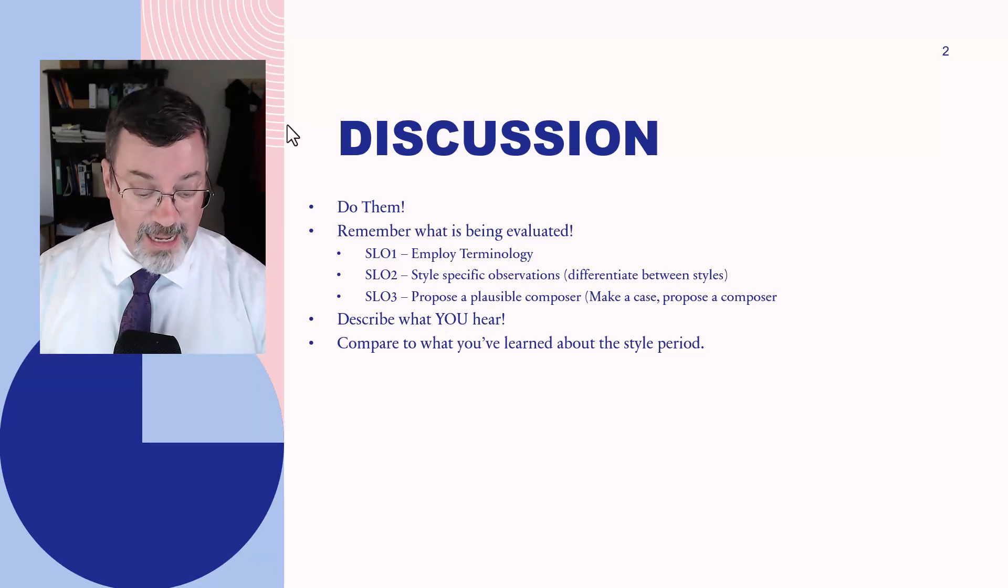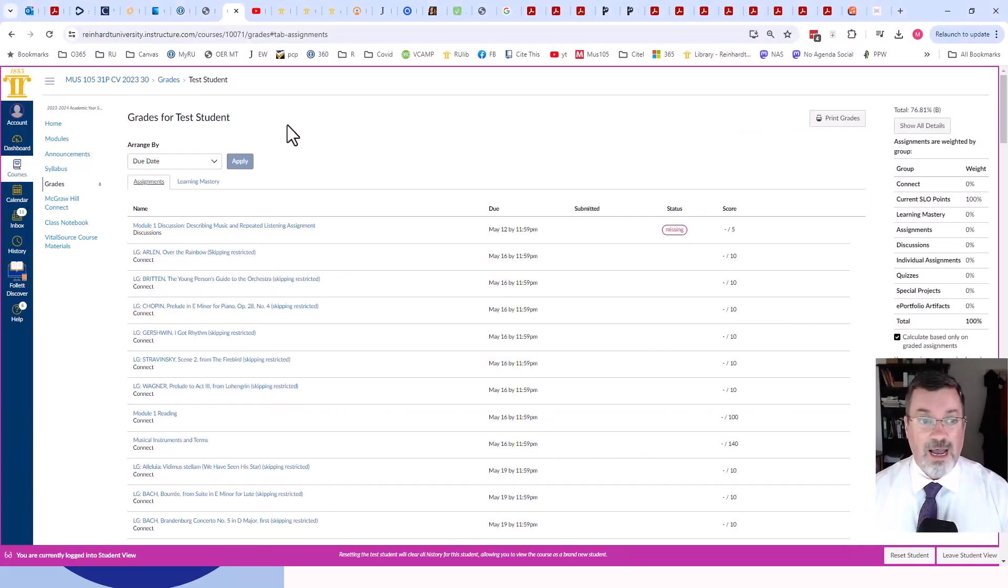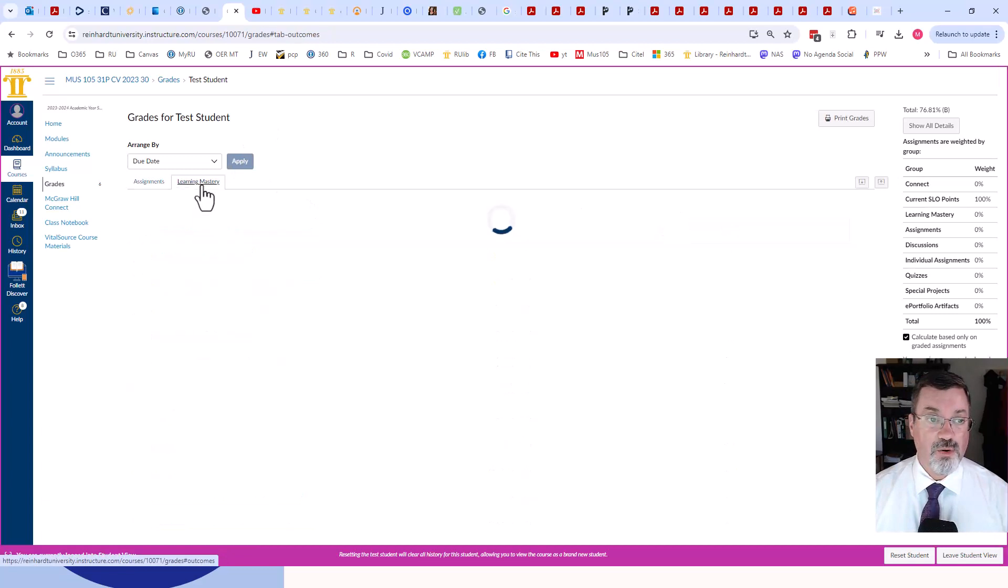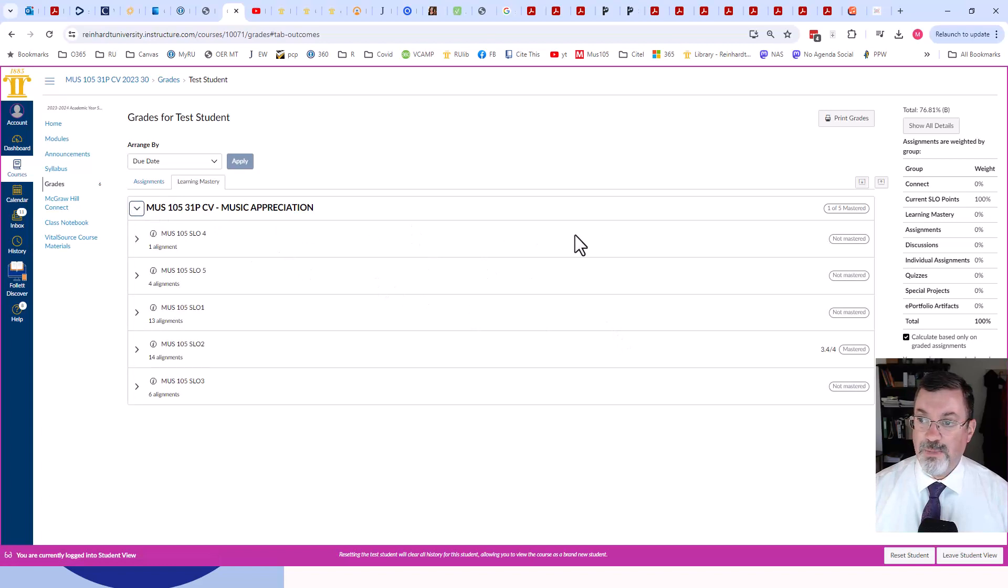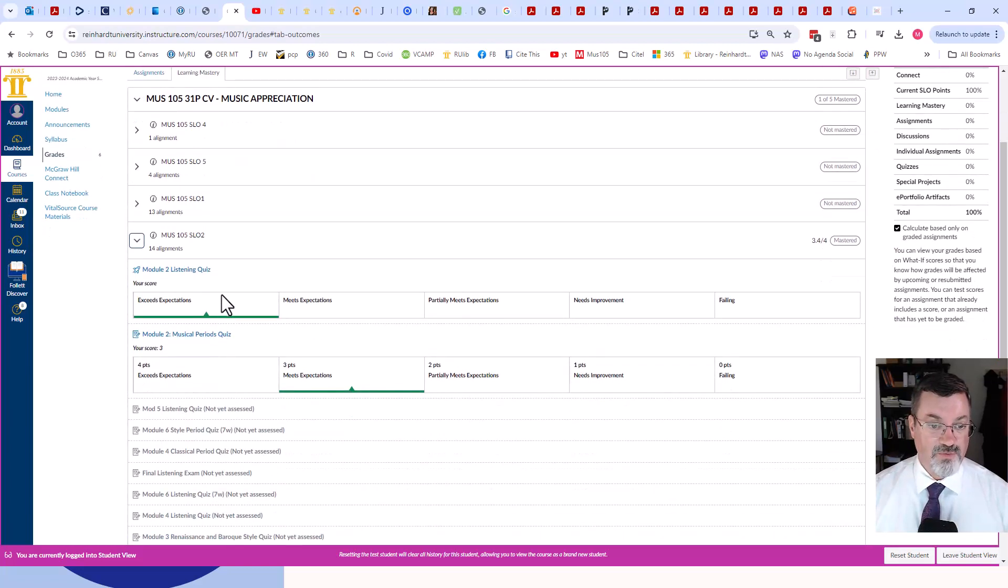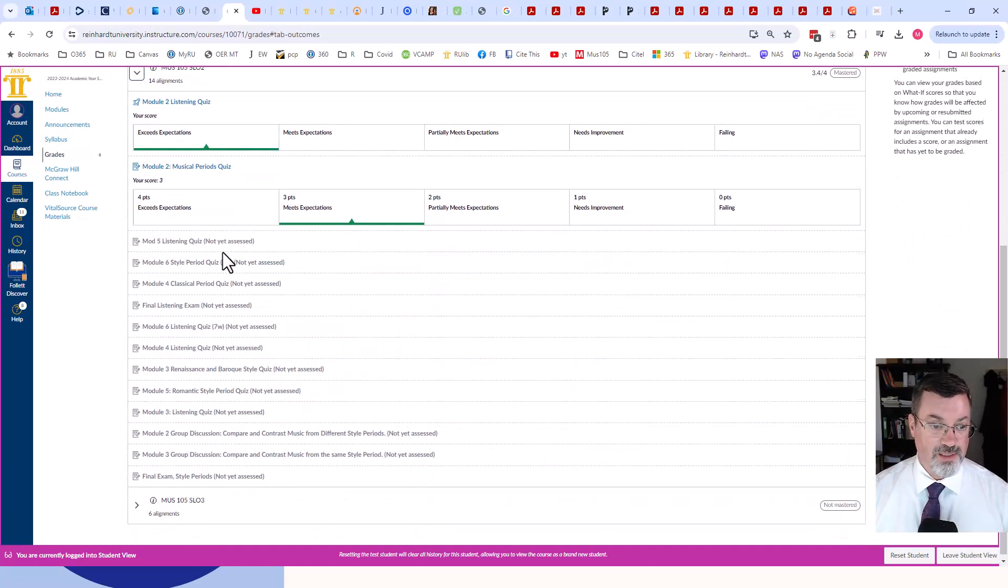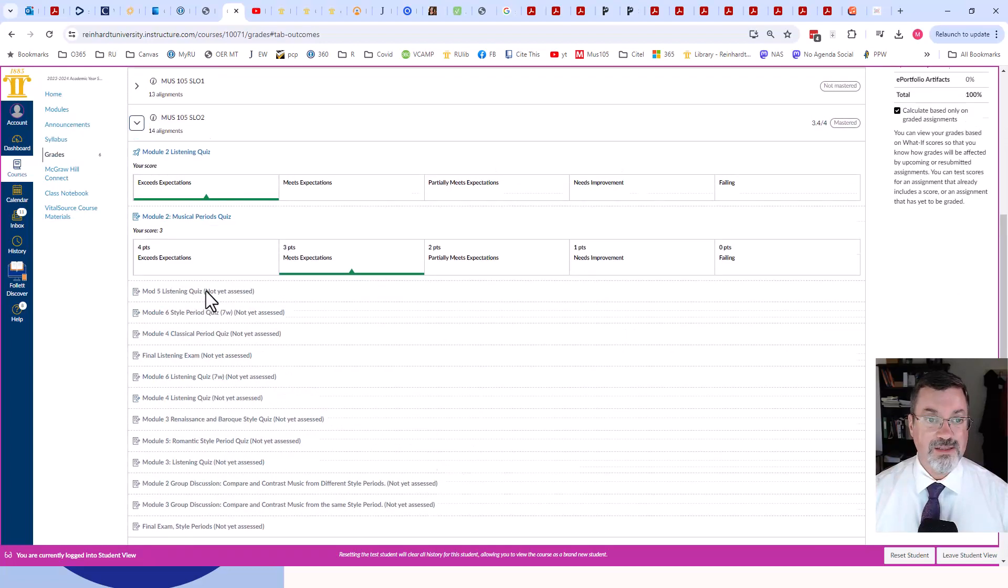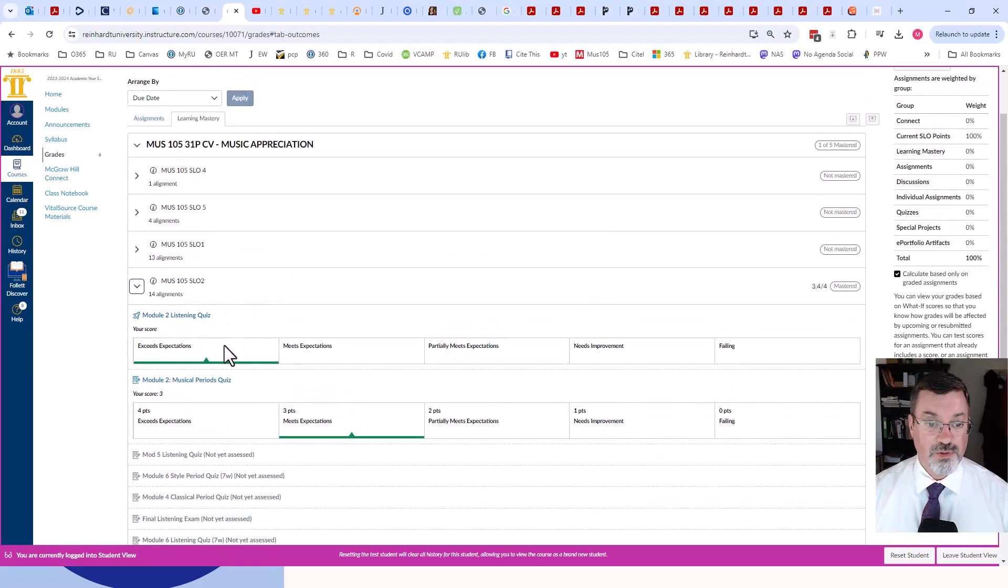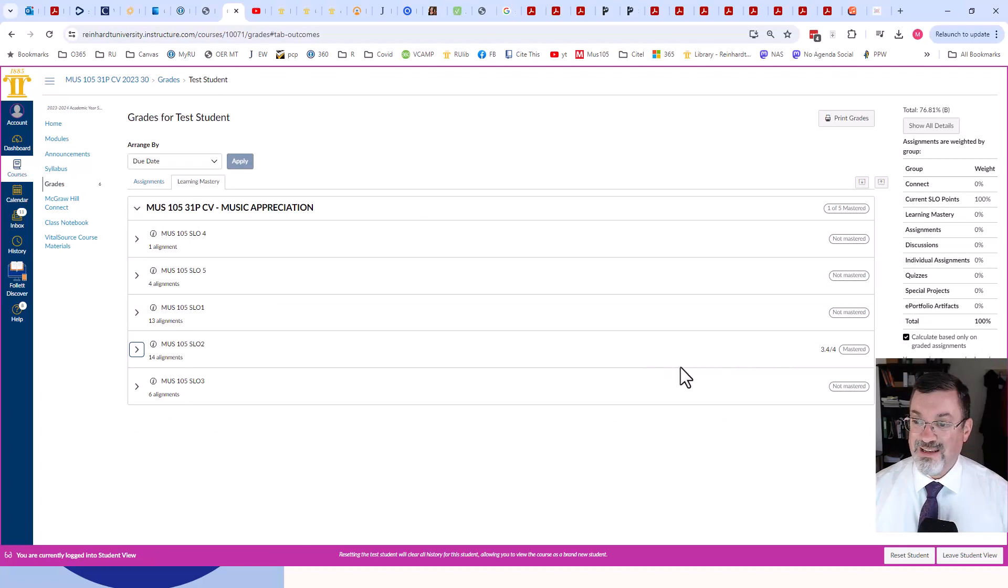So, SLO points. I have, let me show you, I have turned on the Learning Mastery Gradebook. Now, this is just showing it for the test student, and so it's not the best example, but it will show you SLO 1, 2, 3, 4, and 5, and it will show you the alignments for which you have been scored. So, these are all the possible places where you can get scoring for SLO 2 and what you have gotten so far. And don't trust this number too much because I found that it's not accurate.